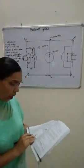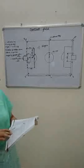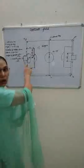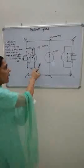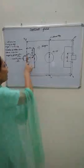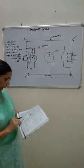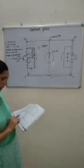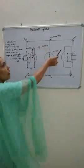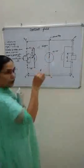The ball is in play at all other times, including when it rebounds from the goal post, crossbar, or corner flag and remains in the play field. Also, if the ball strikes either the referee or assistant referee when they are on the playing field and comes back inside, the ball is still in play.